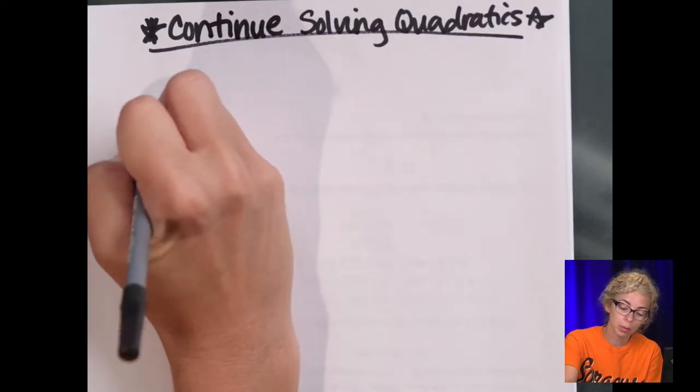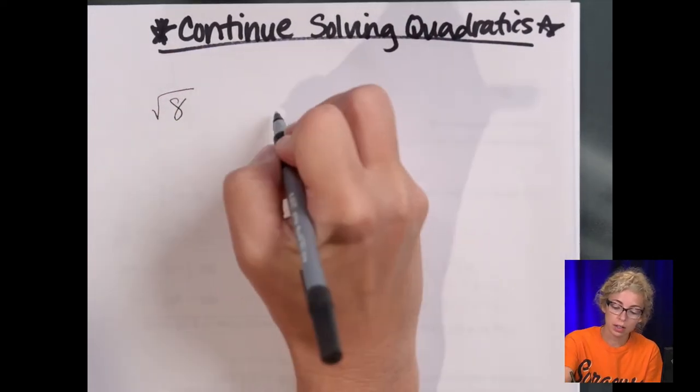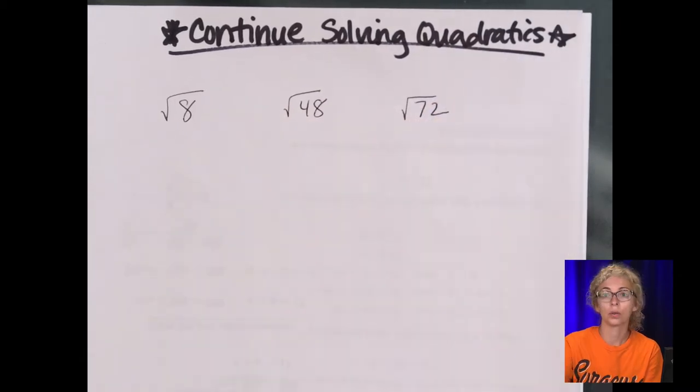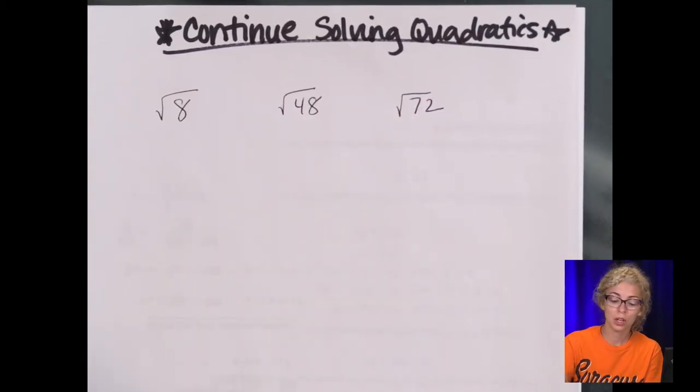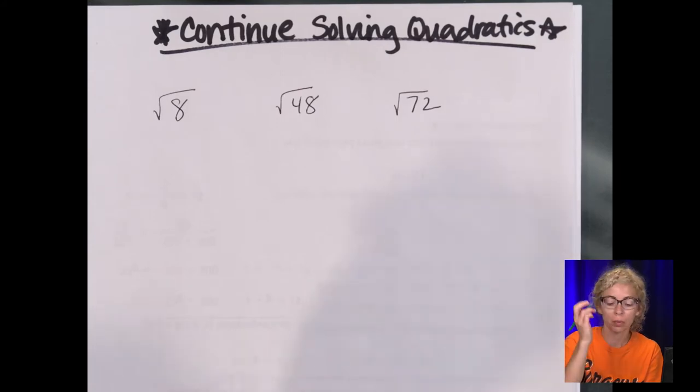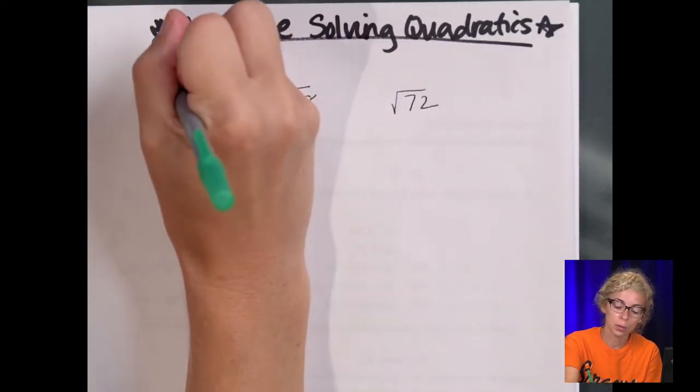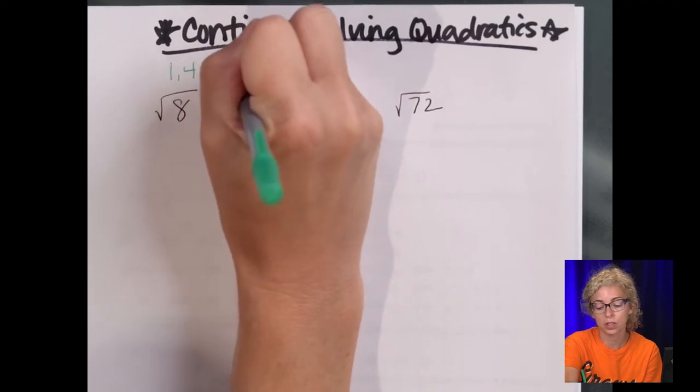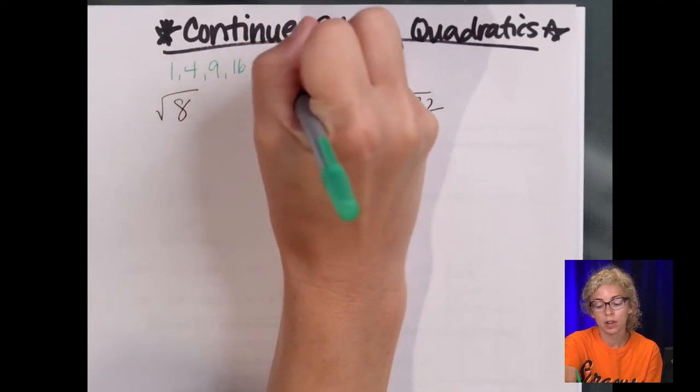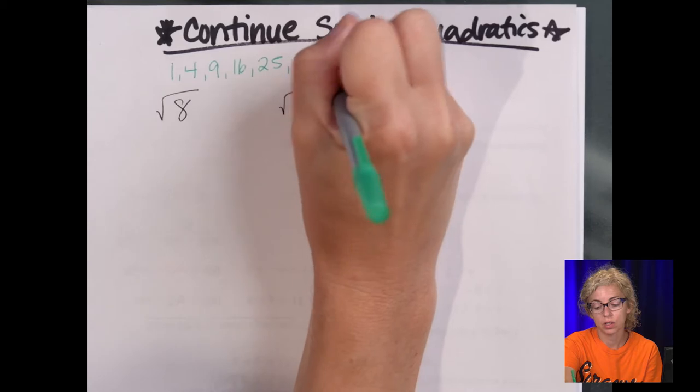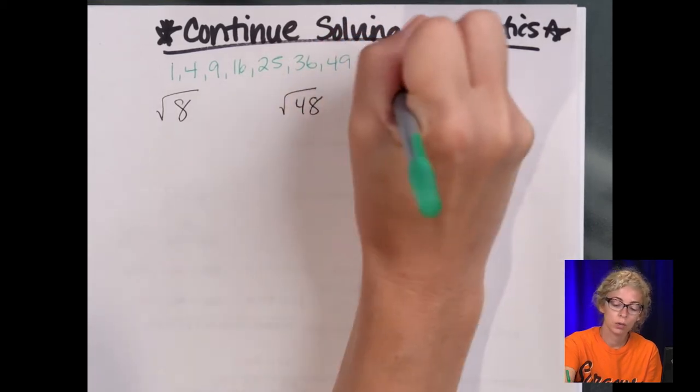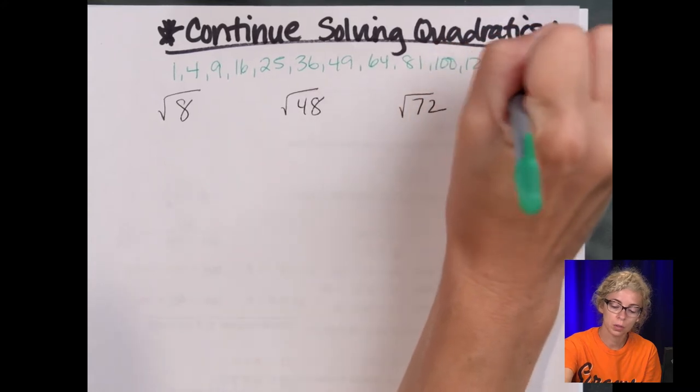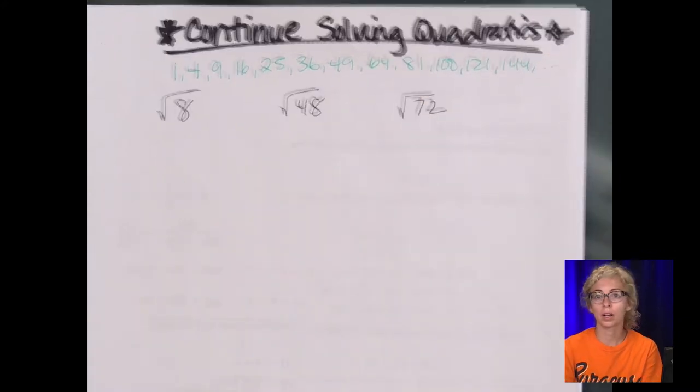So I'm going to put up three radicals, the square root of 8, the square root of 48, and the square root of 72. And we need to simplify those. So you might want to write down your perfect squares. 1 times 1 is 1, 2 times 2 is 4, 3 times 3 is 9, 4 times 4 is 16, 5 times 5 is 25, 6 times 6 is 36, 49, 64, 81, 100, 121, 144. And we could keep going.